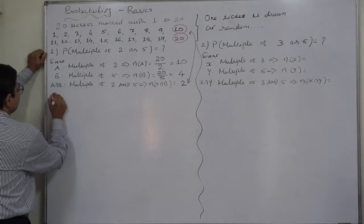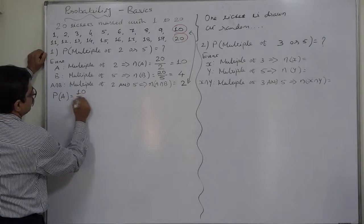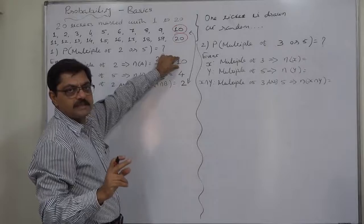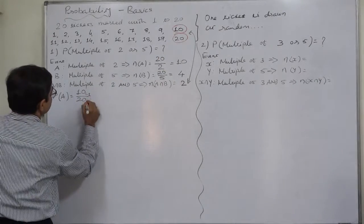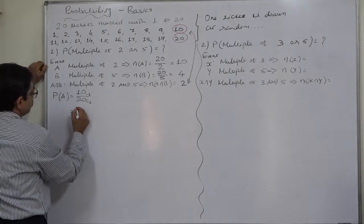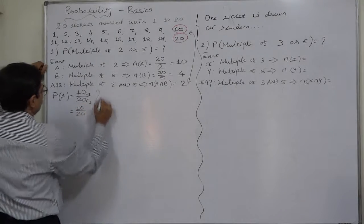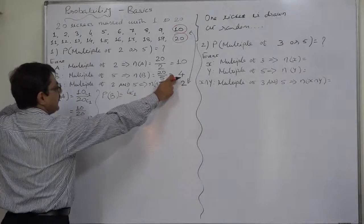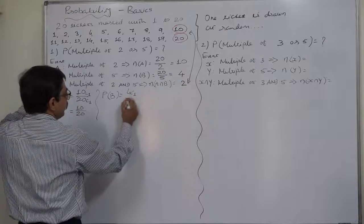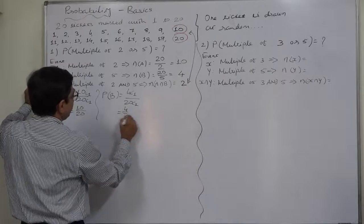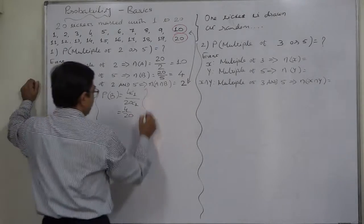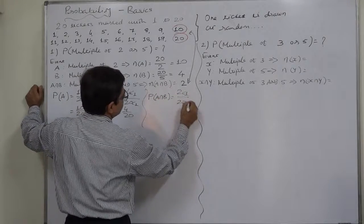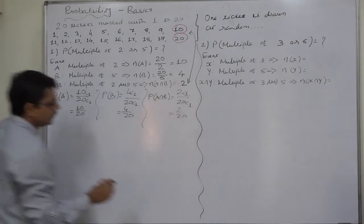Now, P(A) equals 10C1 upon 20C1, which is 10 by 20. Similarly, P(B) equals 4C1 upon 20C1, which is 4 by 20. And P(A intersection B) equals 2C1 upon 20C1, which is 2 by 20.